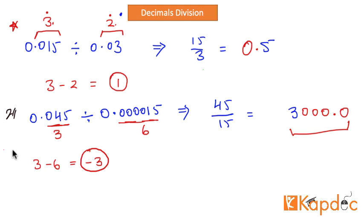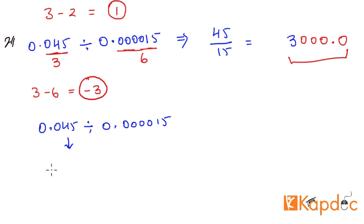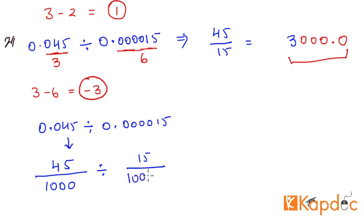Sometimes students find the negative decimal digit result confusing, so an alternate approach is to convert the decimal numbers into their equivalent fractions. So 0.045 divided by 0.000015 becomes: 0.045 is 45 over 1000, and 0.000015 is 15 over 1,000,000. We can then convert this division of two fractions into a multiplication problem.